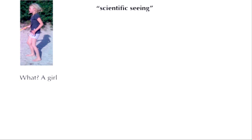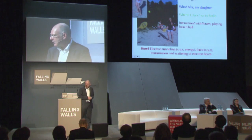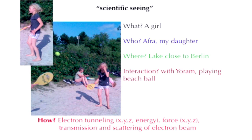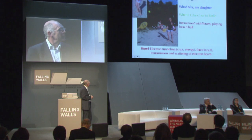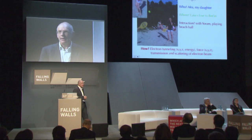To end my talk, I have tried to convey what scientific seeing really means. We started with a picture of a girl, and we only knew it was a girl, but by getting more information we get a much broader view of atoms. The information was achieved by looking at electron tunnel currents — one way of seeing — looking at the force between the last atoms between a tip and a surface, and looking at the transmission of an electron beam in different projections and reconstruction of the total atomic structure of a crystal. Thank you for your attention.